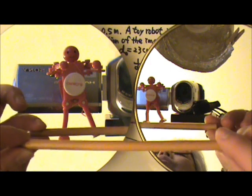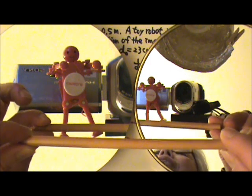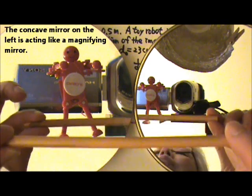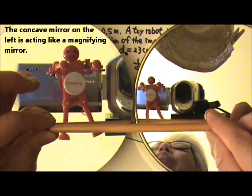So you can see the pencil's image is thicker in that concave mirror. So this is when the mirror acts like a magnifying mirror.